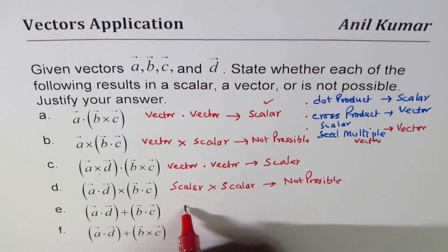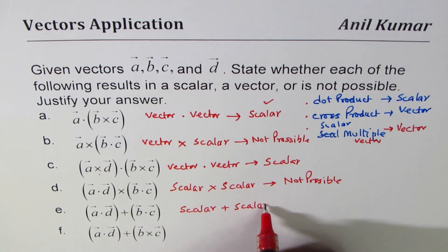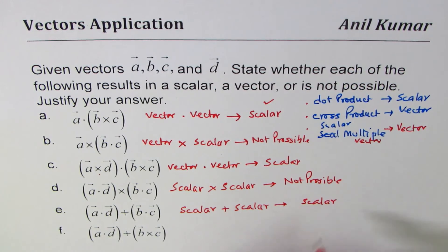How about this? This is scalar. We have a scalar + scalar, that is okay, and that will give you a scalar. You can always add two quantities. Now here you have scalar plus...